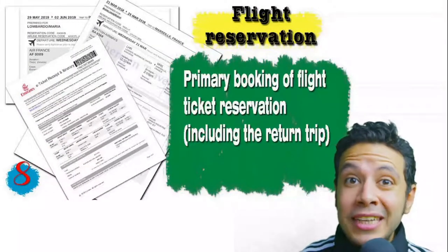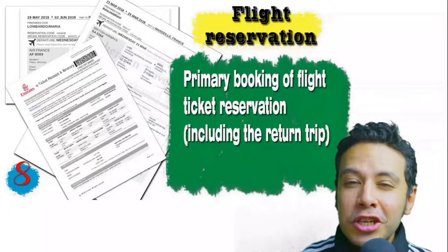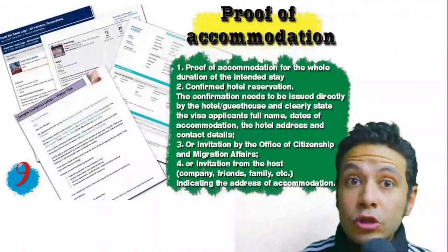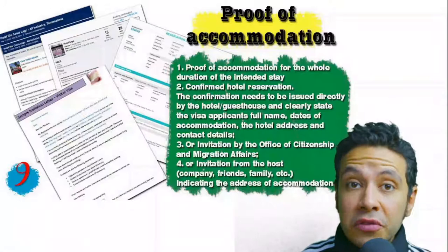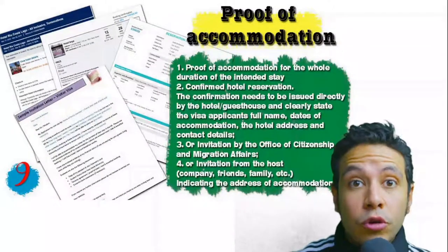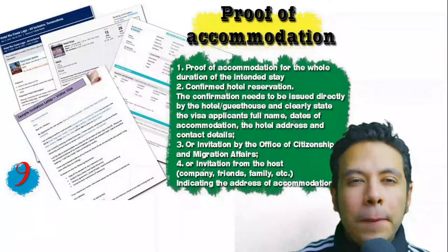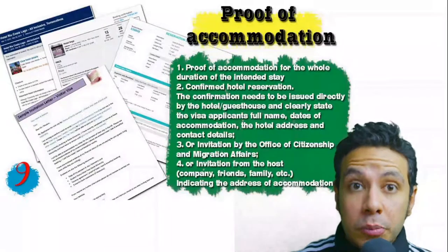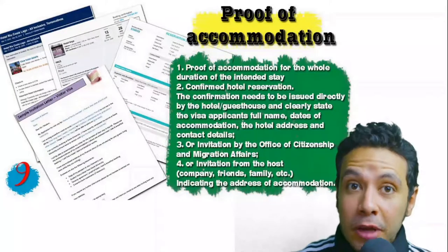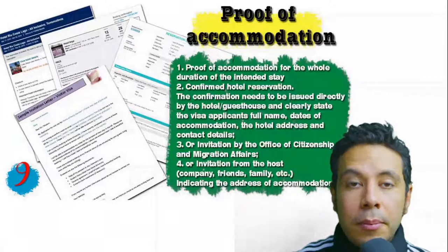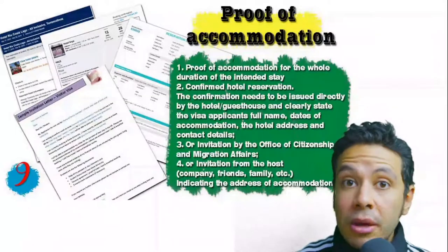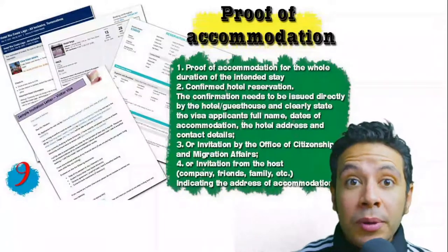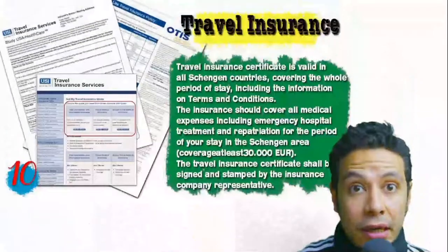You should also provide a flight reservation — it could be an initial booking, but in some minor cases a confirmed booking is needed. This flight reservation must include a return ticket. You will also need proof of accommodation: a confirmed hotel reservation, an invitation from a host in the country, or an invitation from an organization you are visiting. For a hotel or hostel, an initial booking is acceptable, though in some minor cases a confirmed booking may be needed. The hotel name, address, and contact number must be mentioned.